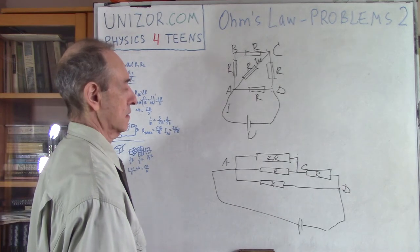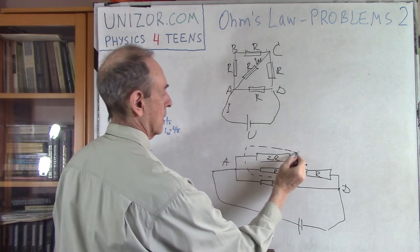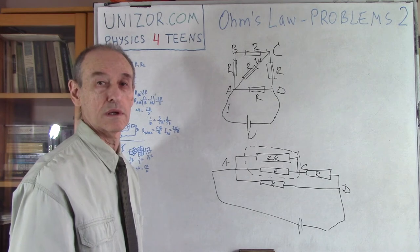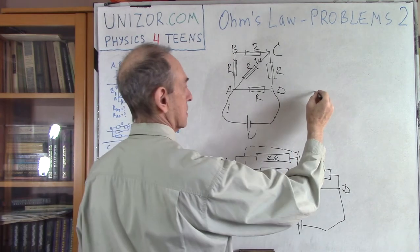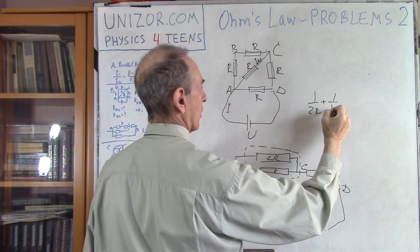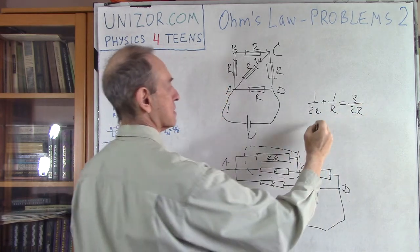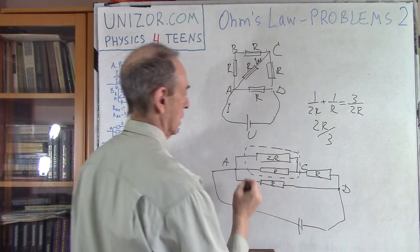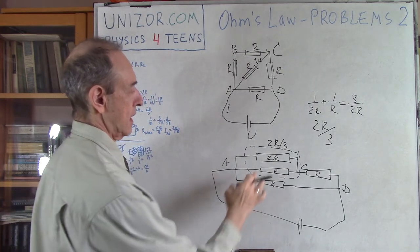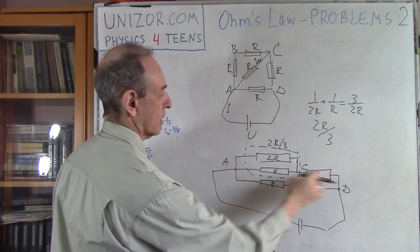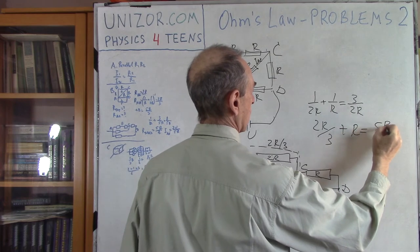Now what happens? This part is just two parallel resistors, and we can find their total resistance: 1 over 2R plus 1 over R equals 3 over 2R, so the total resistance is 2R over 3. Now you have 2R/3 and R in series, so you add them together, which gives 5R over 3.